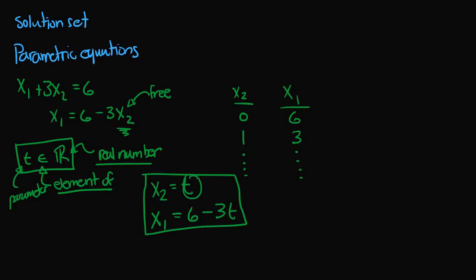Since t can be any real number, x2 can be any real number. And if t is any real number, we will always get some corresponding value for x1 that depends on t.